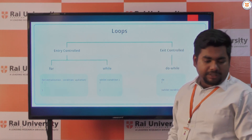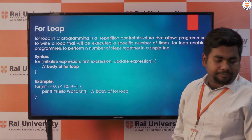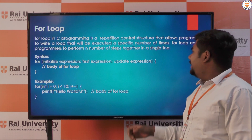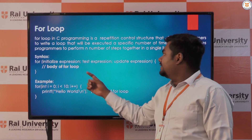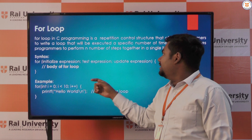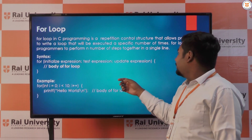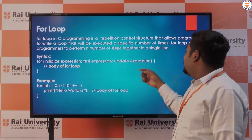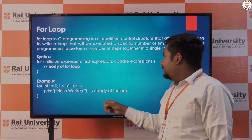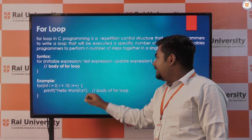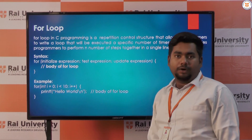Next we discuss the for loop. In a for loop there are three statements: first is initialization, then is test expression, then is update. Here you can check one example of for loop.